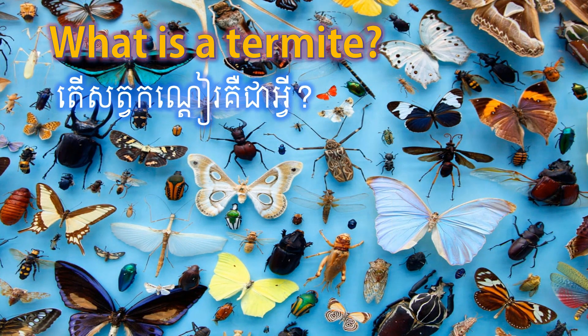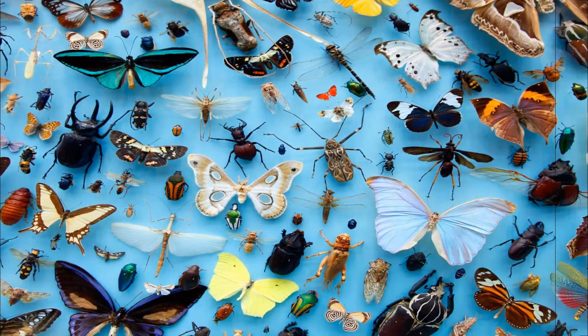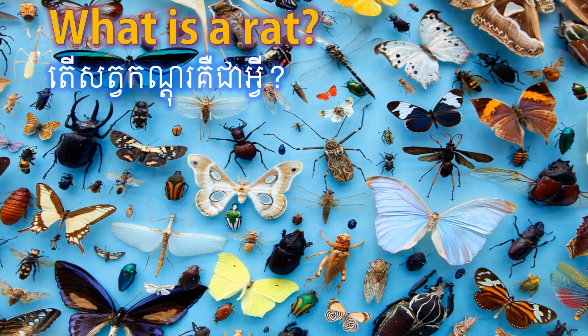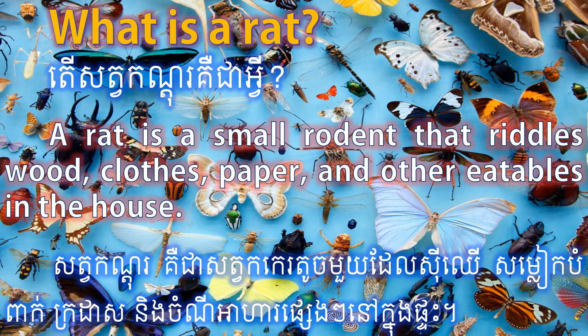What is a termite? It's a very small insect which eats into paper and wood. What is a rat? A rat is a small rodent that riddles wood, clothes, paper, and other eatables in the house.